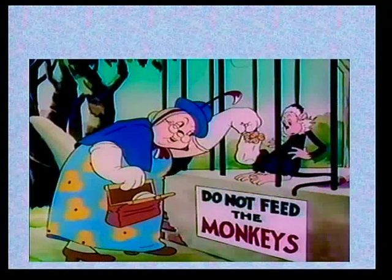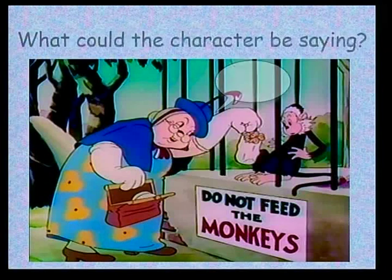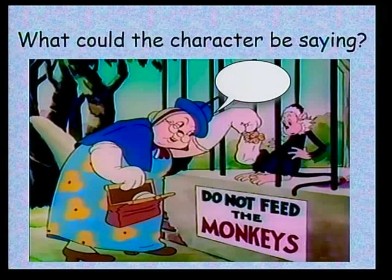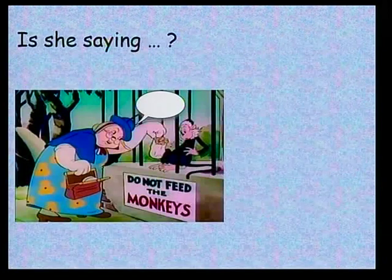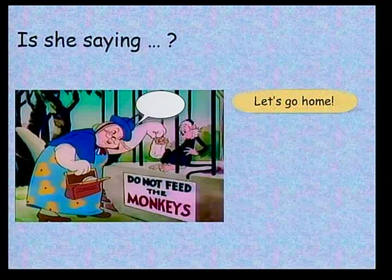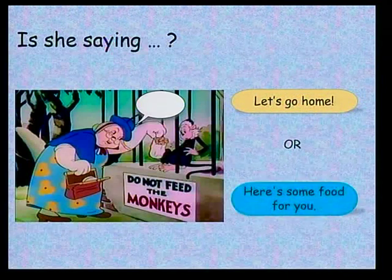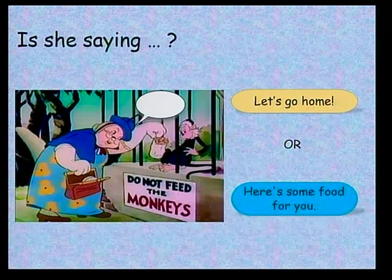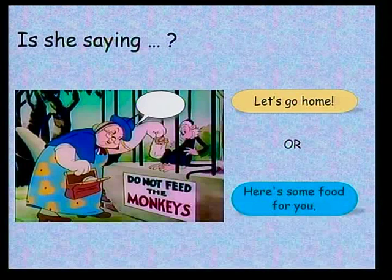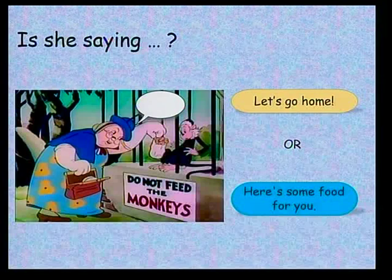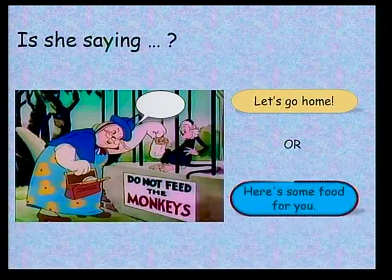Observe this next picture carefully. What could the character be saying? Is she saying 'Let's go home' or 'Here's some food for you'? You can see that the lady is giving some food to the monkey, so the second answer is correct: 'Here's some food for you.'